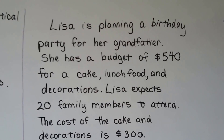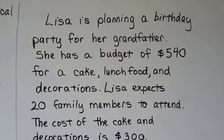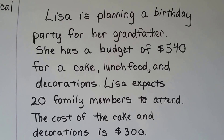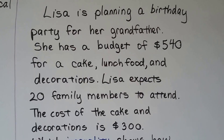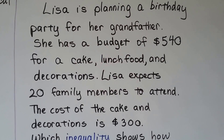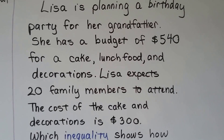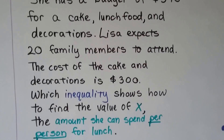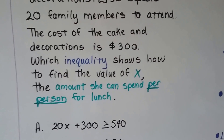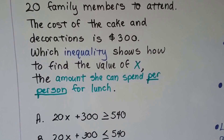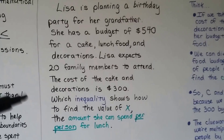Lisa's planning a birthday party for her grandfather. She has a budget of $540 for a cake, lunch food, and decorations, and Lisa expects 20 family members to attend. The cost of the cake and decorations is $300. Which inequality shows how to find the value of X — that's the amount she can spend per person for lunch?